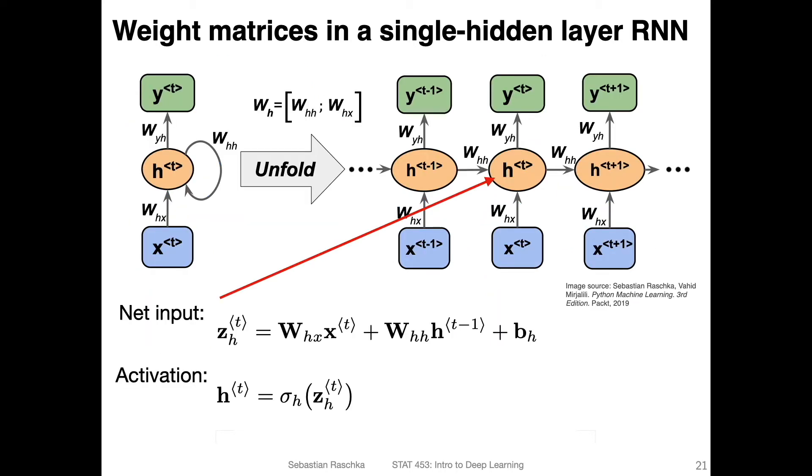So how do we compute now the hidden state? This is essentially very similar to computing the regular net input, except that we have now two weight matrices and two inputs. So let's consider this case where we compute the net input for this hidden state here at time step t. So what we do is, like before when we computed the net input in a multilayer perceptron, we multiply this weight matrix here with this input here. And that gives us the hidden state.